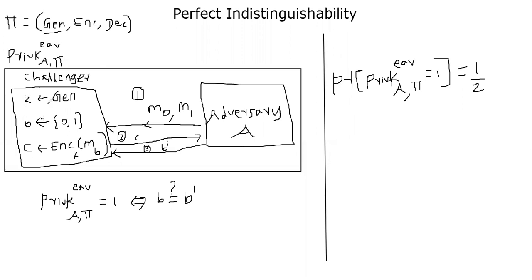The challenger is going to apply the key generation algorithm and generate the key K, the symmetric key K. Only the challenger knows the key K, of course. He's going to randomly pick an element 0 or 1. So bit B is either 0 or 1 and encrypt the message either M0 or M1, depending on whatever B is. B is randomly chosen from 0 and 1 set.